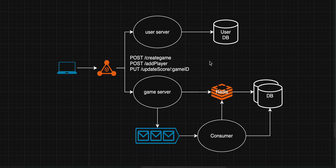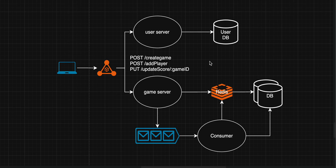We've now covered all functional and non-functional requirements. Responsibilities are separated so the system is highly available. For the SQL DB, master-slave replicas provide high availability, and SQL gives us consistency. Asynchronous Kafka queues make the system highly scalable. I'll be creating more videos on when to choose SQL vs NoSQL and how Kafka works internally. Let me know how you liked this video and what other design topics you'd like to see.